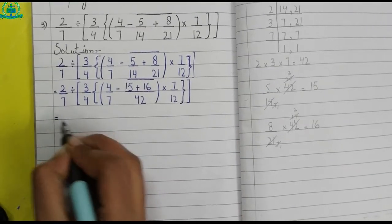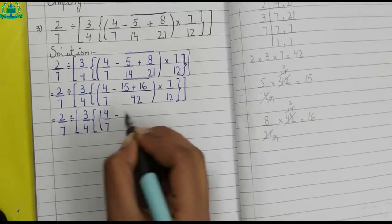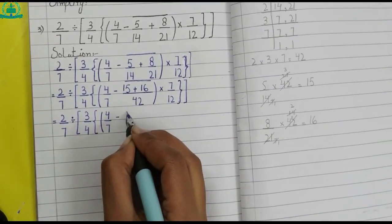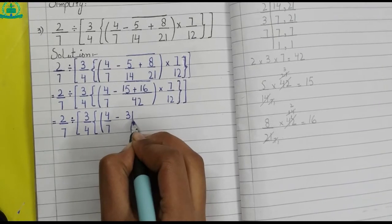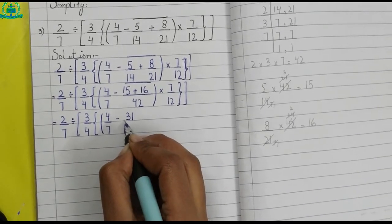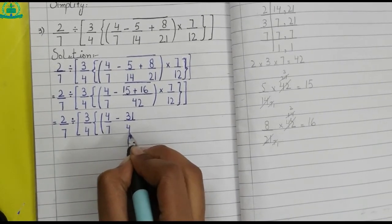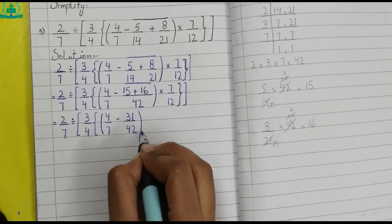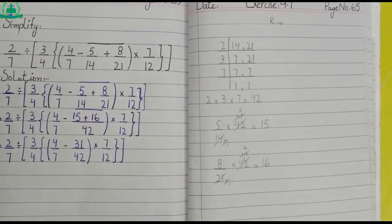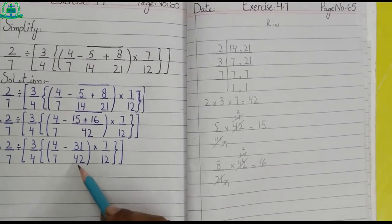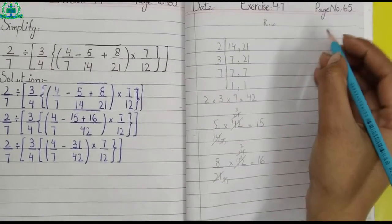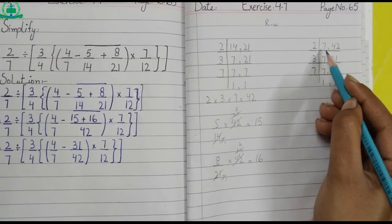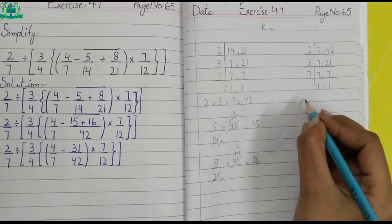Keep the remaining part of the question as it is. 15 plus 16 makes 31, so we write 31 upon 42. Again we take LCM of these two fractions. Rough work: we multiply all the factors of 7 and 42.